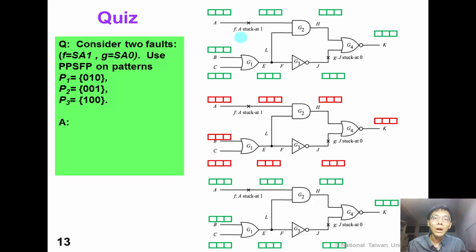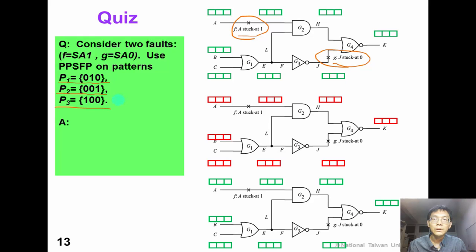Now back to our motivating problem. Consider two faults: fault F is stuck-at-1 and fault G is stuck-at-0. Please use PPSFP on the same patterns: P1 = 0-1-0, P2 = 0-0-1, and P3 = 1-0-0. Please determine the faulty outputs and which faults are detected. Please pause the video now.